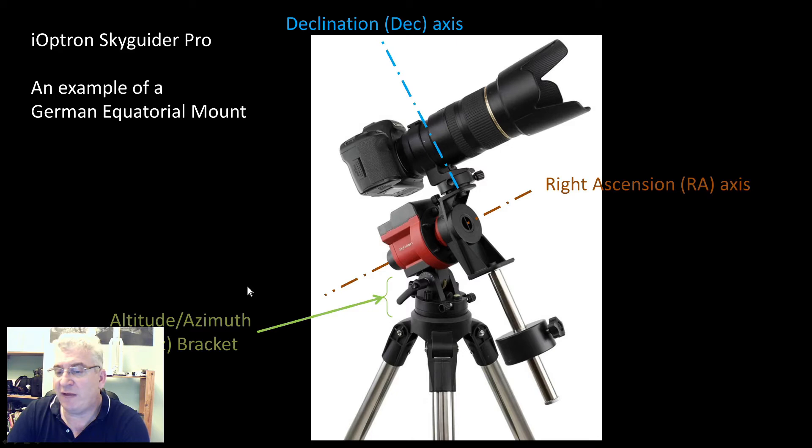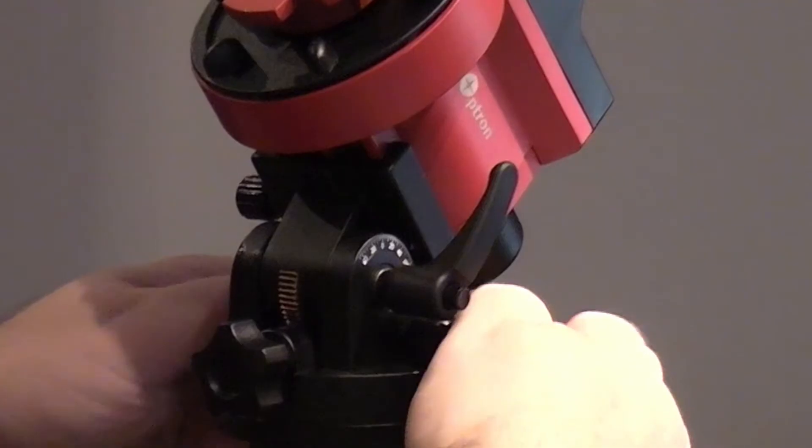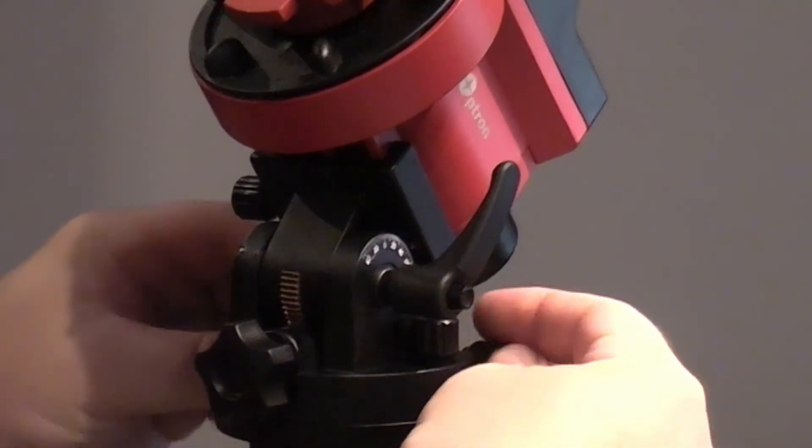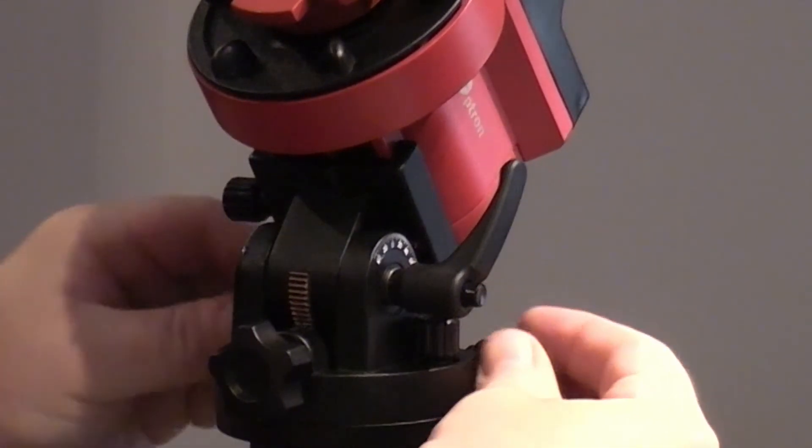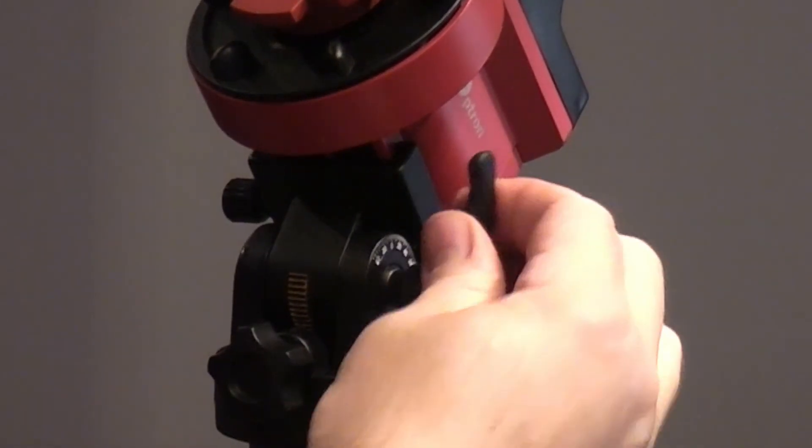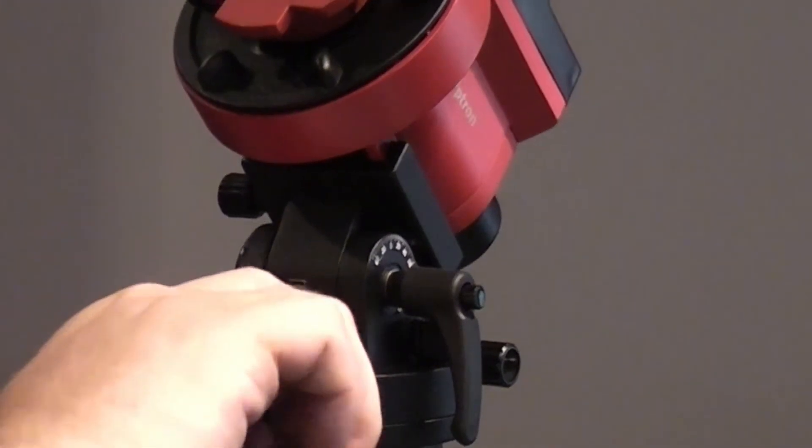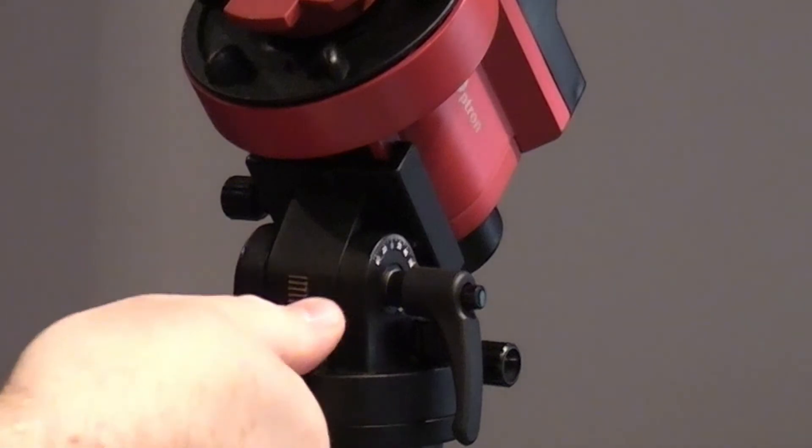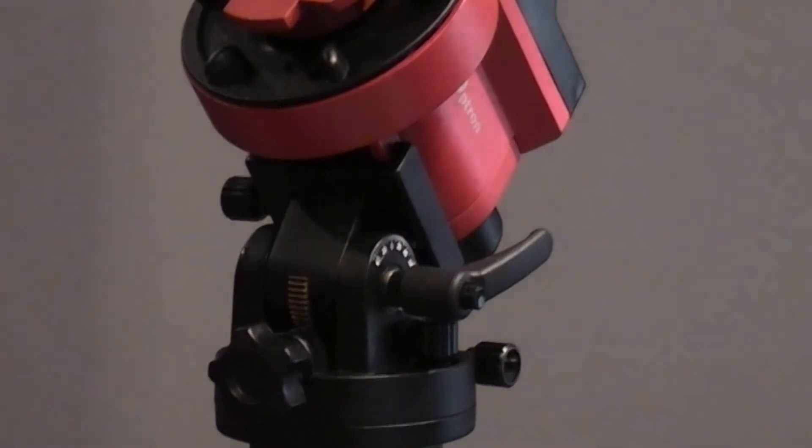Then we have this altitude azimuth bracket. The purpose of the altitude azimuth bracket is to allow us to make those adjustments to get the right ascension axis parallel to the Earth's rotation axis. That's done using two different adjustments. One is in azimuth. These two opposing screws here rotate the base of the azimuth bracket in a horizontal plane. Then the altitude or elevation adjustment screw adjusts in elevation. Those are the adjusters at the bottom which enable us to align that right ascension axis.